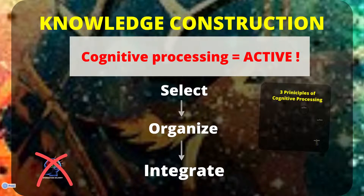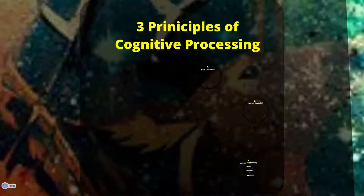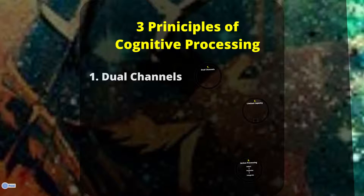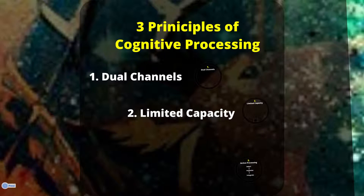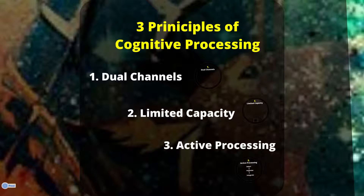In order to understand this process with regards to multimedia use, it's helpful to look at three principles of cognitive processing. The first principle is the idea that you're going to be using dual channels to take in information. The second principle is called limited capacity — humans really only have the ability in their active and working memory to work with and process a few ideas at any given moment. The third idea is active processing, which we just briefly reviewed.